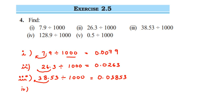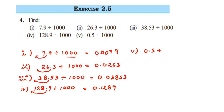Fourth question: 128.9 divided by 1000. Three places to the left — the answer is 0.1289. Fifth question: 0.5 divided by 1000. The decimal is already there, so three places means we put two more zeros: the answer is 0.0005.